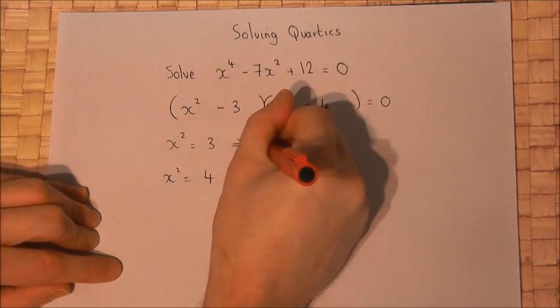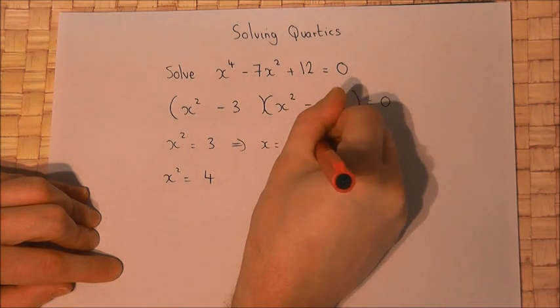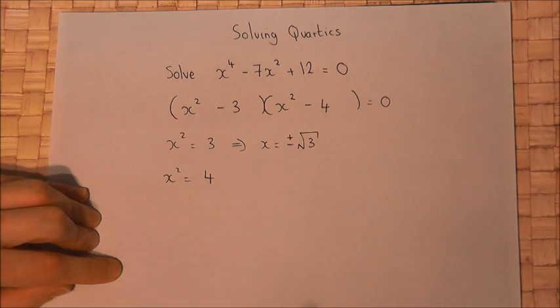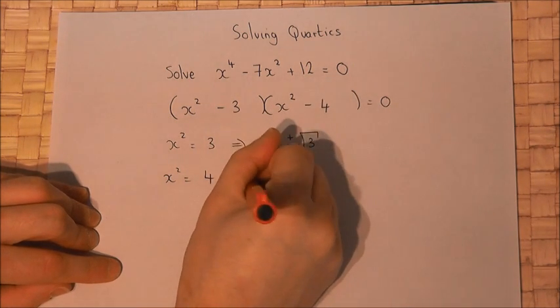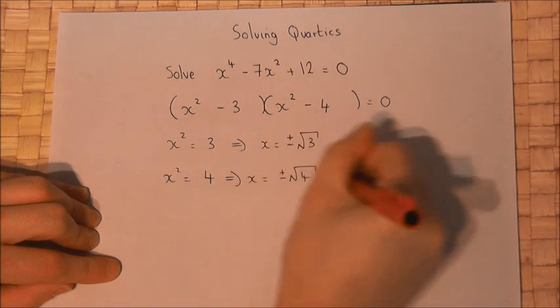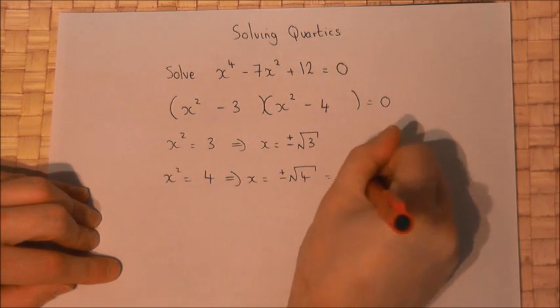So therefore x will equal the square root of 3, but don't forget it could be plus or minus. Or x will equal the square root of 4, plus or minus, which is plus or minus 2.